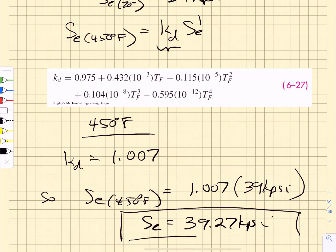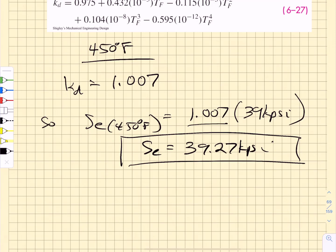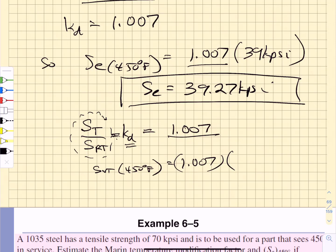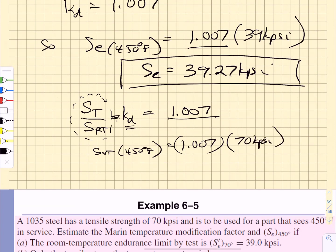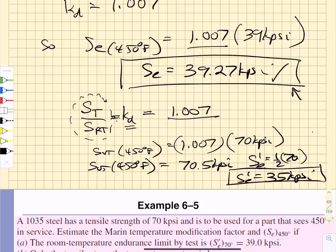So our endurance limit has gone up as we move from room temperature to 450 degrees Fahrenheit. The other thing that we could do is take the ratio of the ultimate tensile strengths and set that equal to KD. We know KD is 1.007, so the ultimate tensile strength at 450 degrees Fahrenheit is going to be equal to 1.007 times the ultimate tensile strength at room temperature, which is 70 kpsi. That gives us an SUT at 450 degrees Fahrenheit of 70.5 kpsi, so the estimated endurance strength would be half of that — just equal to 35 kpsi. This answer up here gives us a larger endurance strength than does this one, but if you want to stay conservative you would use the 35 kpsi.